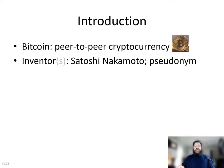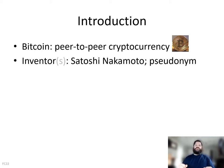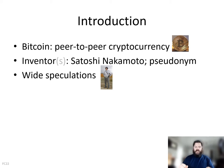So an introduction. Bitcoin as we know is a peer-to-peer cryptocurrency. The inventor is Satoshi Nakamoto, but we don't know who that individual is as that's a pseudonym. There are a few people that we think it could be — some have volunteered themselves and others have been identified as possible suspects. Among those include Dorian Nakamoto, Craig Wright, and Hal Finney, and there's more as well.